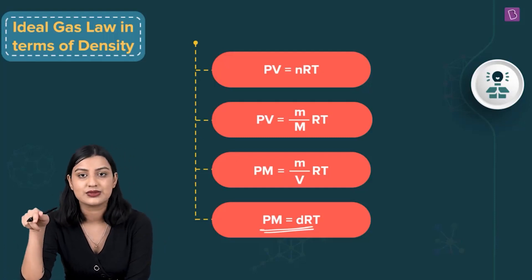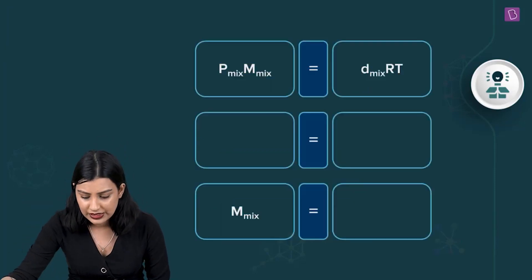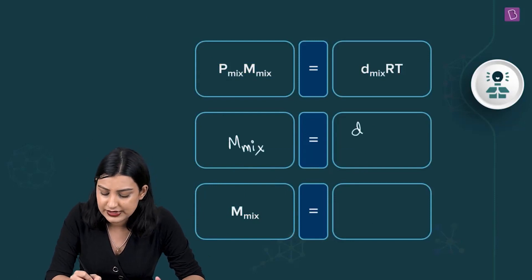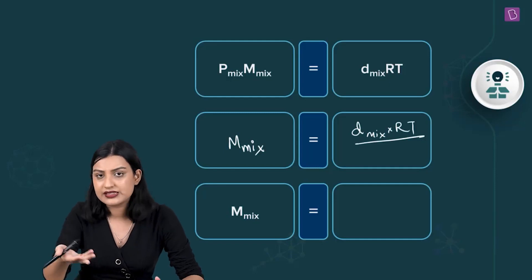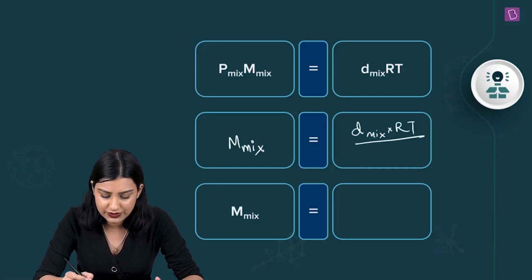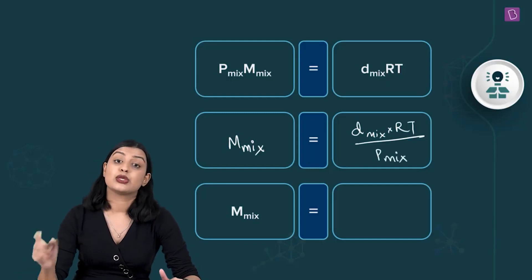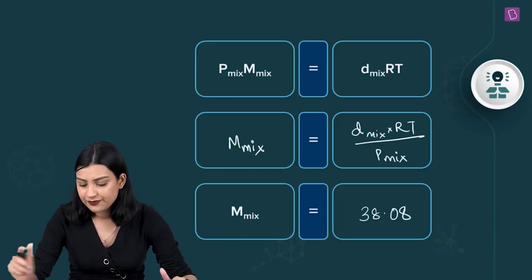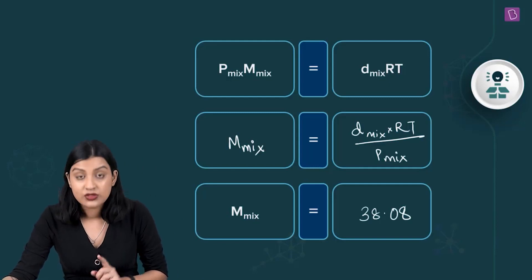The equation becomes: molar mass of the mixture = density of the mixture × R × T divided by pressure. T is 273 Kelvin, R is the standard value in the given units, and pressure is 1 atm. When you calculate, you get the molar mass of the mixture as 38.08 grams per mole.